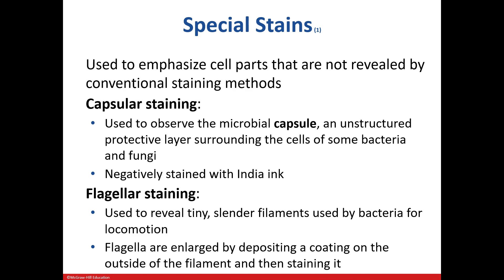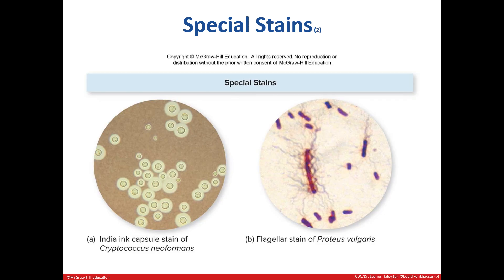We also have special stains in addition to the differential stains. Some organisms produce a carbohydrate-rich substance called a capsule, which can be detected by a capsule stain using India ink. Flagellar staining can be used to determine if an organism has flagella, which allows for movement. On the left, we can see a dark background and a brightly illuminated capsule surrounding the bacterium. We can also see on our right, mini flagella.